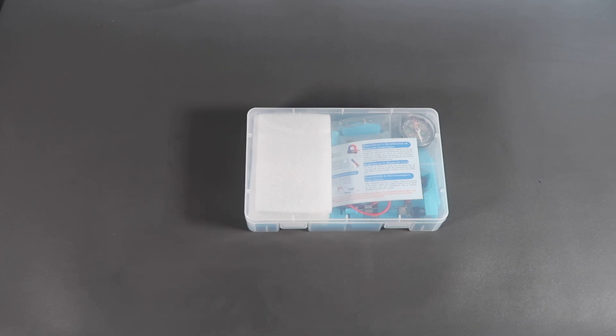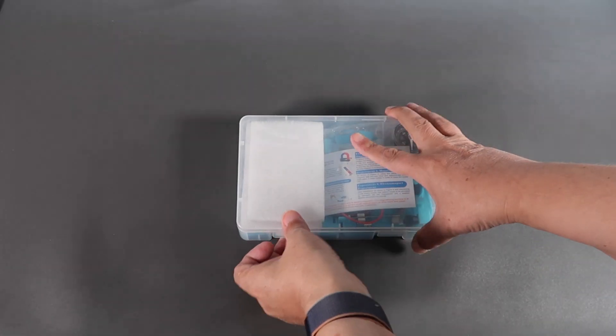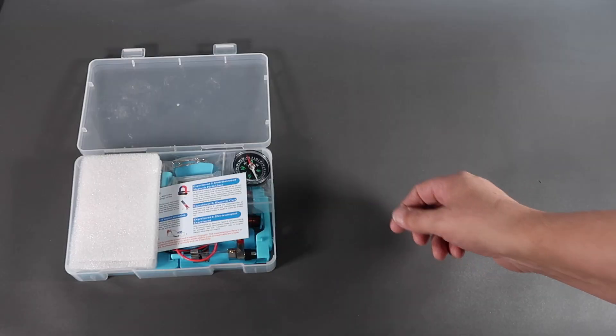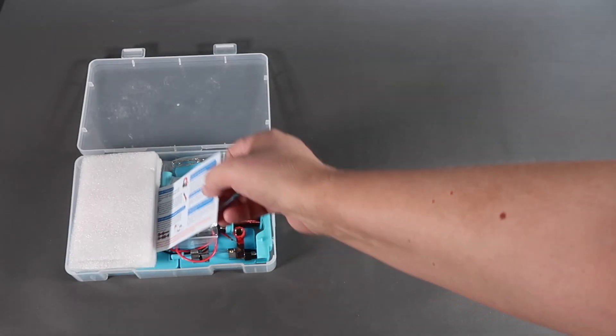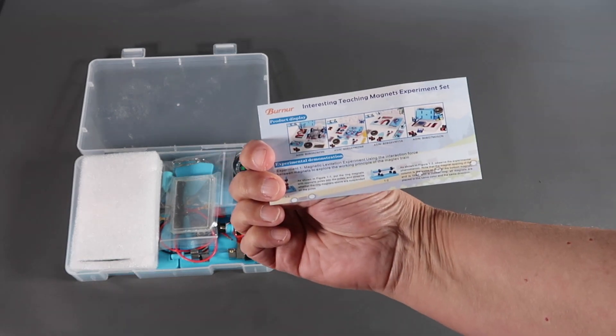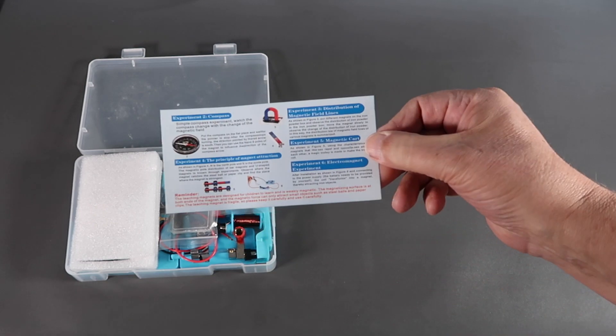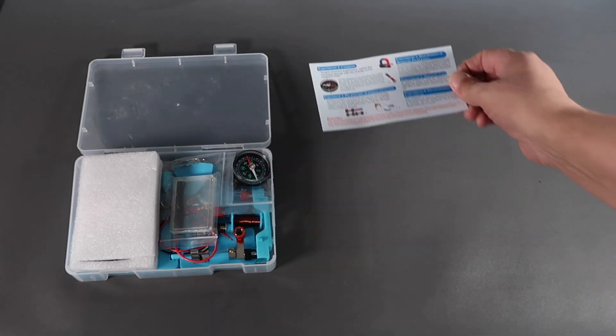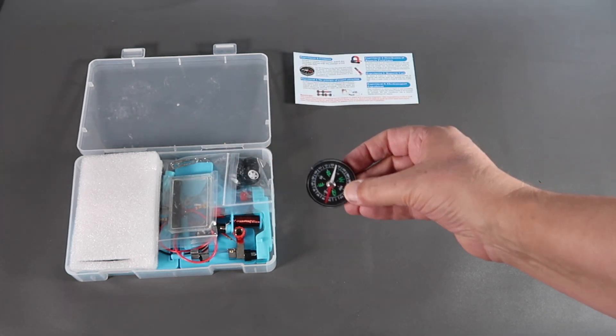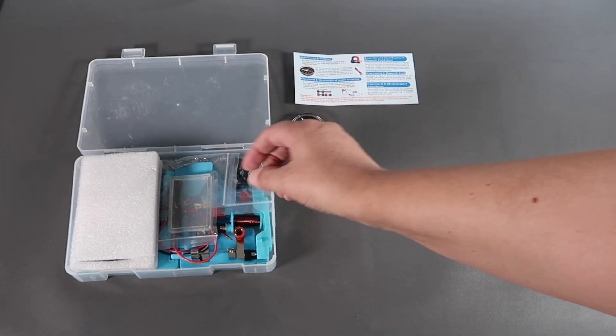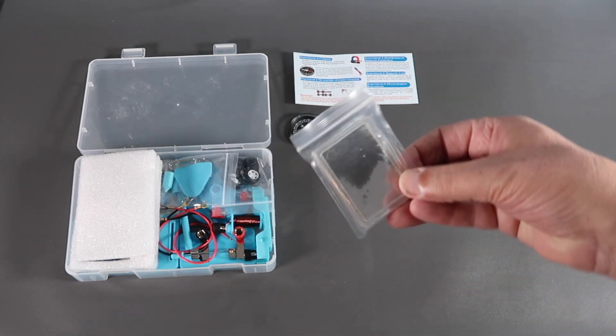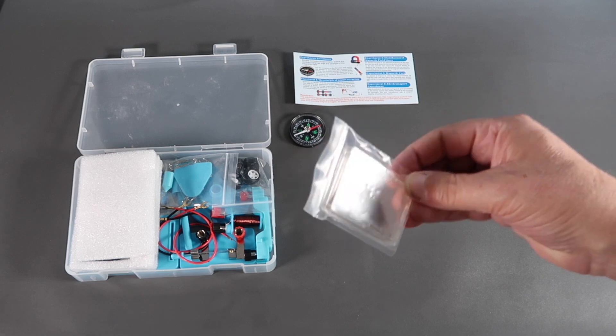Let's take a look at what we have in this case. So we have a tiny little instruction sheet, a compass, a little box with iron filings inside.